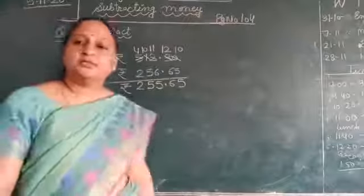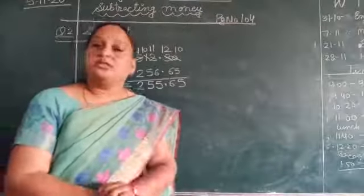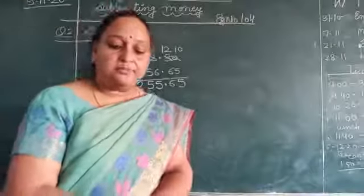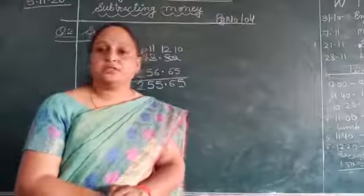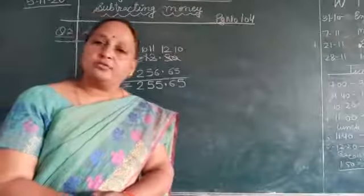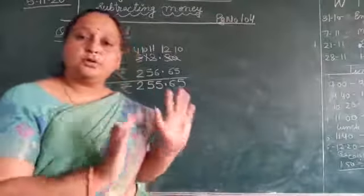So the answer is 255 rupees and 65 paise. So in this same way, on page 104, I have done question number 3 for you. Question number 1 I have told you is addition, so you can do it in your book.